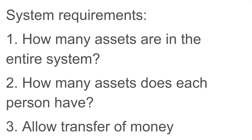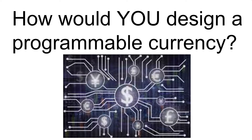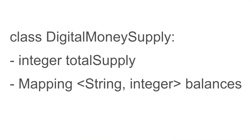So let's think about the requirements in our system so far. First, we need a way to know how many assets there are in total in the system. Secondly, we need to know how many assets each person has. And lastly, we need to allow parties to transfer money to each other. If I were to use an object-oriented approach, I might have a class called Digital Money Supply. In this class, I would have total supply — representing the amount of money in the system — as an integer, and then balances, which will keep track of the balance of each person. This could be a mapping in which a string maps to an integer — the string might represent a name such as Alice, and the integer the amount of money Alice has.